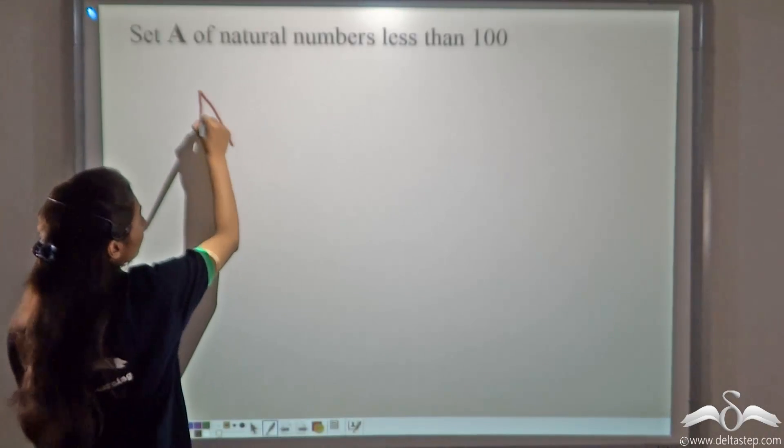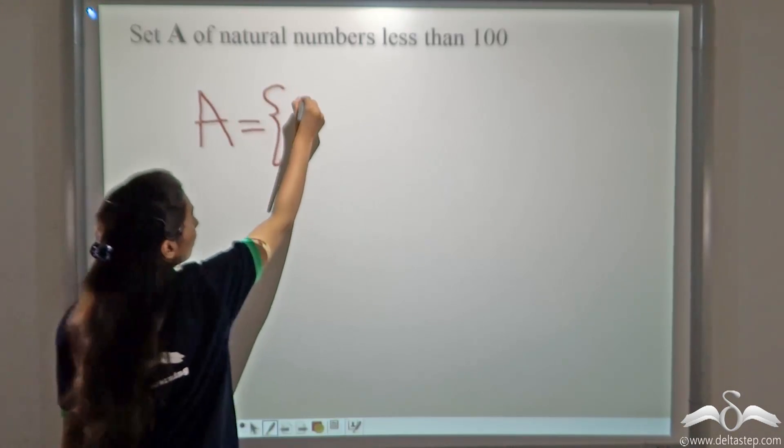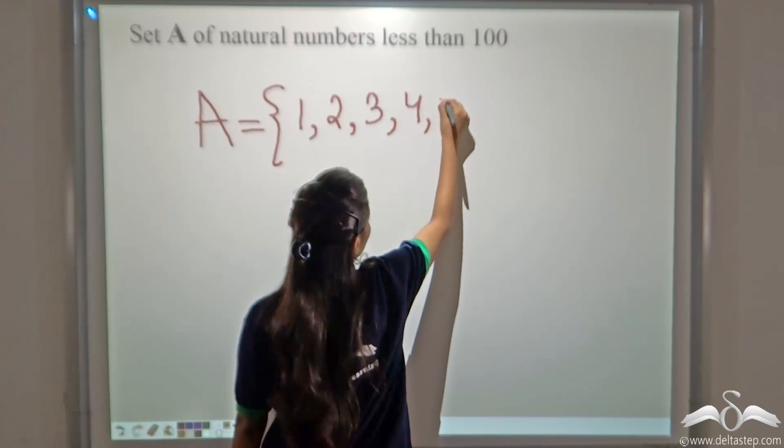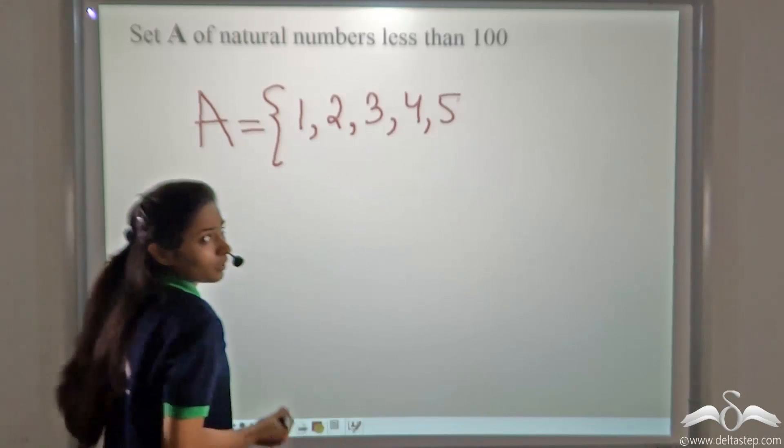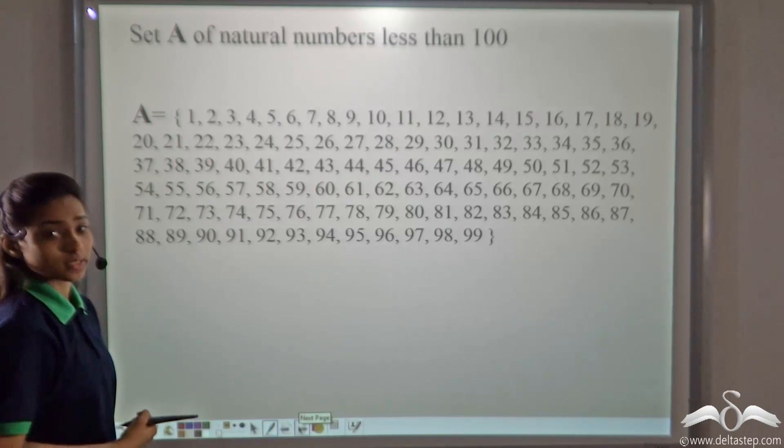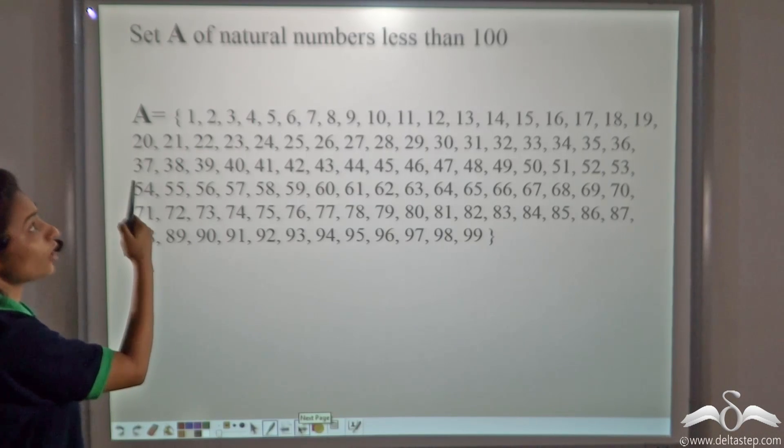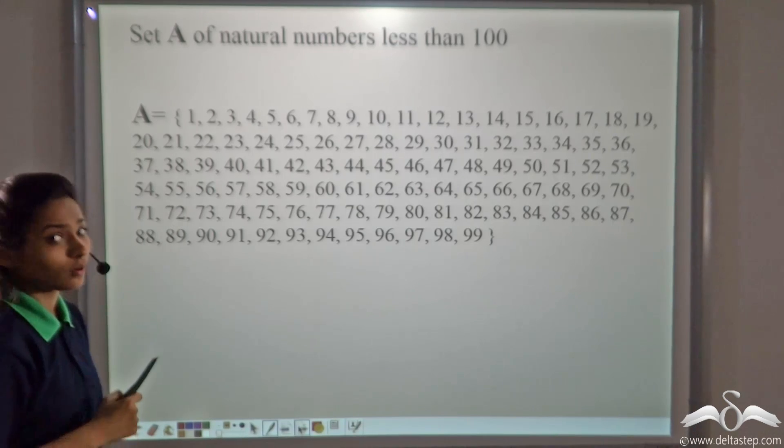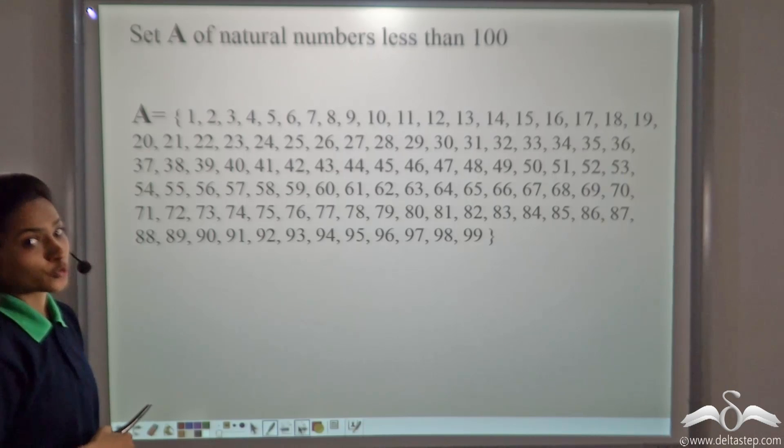The set of natural numbers less than 100. So, we will write the natural numbers less than 100. It will be so tedious. Still, let's try writing. So, A is equal to 1, 2, 3, 4, 5. It will look something like this. But, can you waste so much of time writing these numbers? What if it would be set A of natural numbers less than 1000? Would you write the numbers from 1 to 999? No. What is the shortcut we can use here?